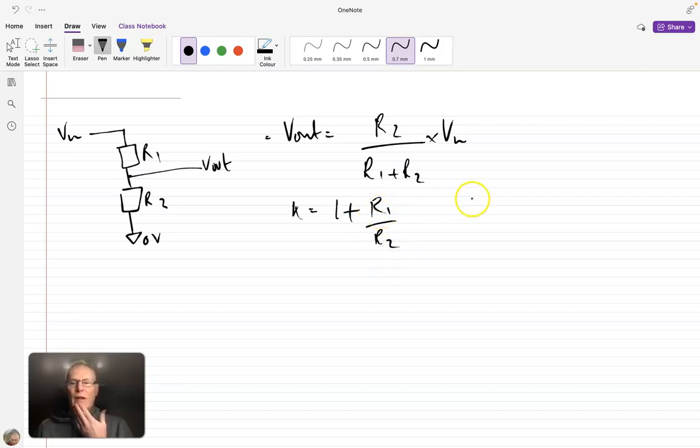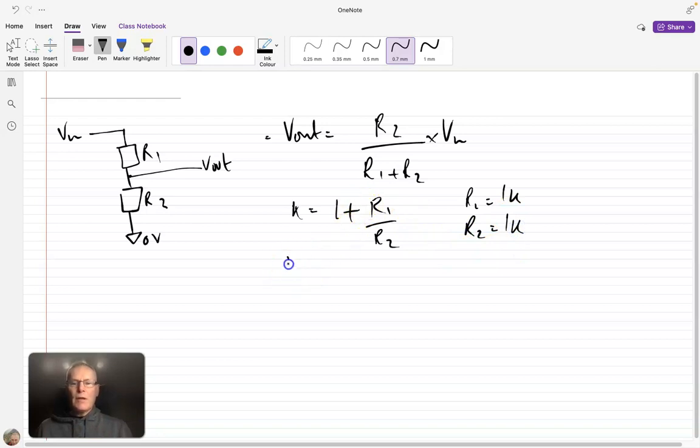For example, if we made R1 equal 1K, and R2 equal 1K, we can see that K in this case would be 2. What this says is, this is going to be our attenuation coefficient, so we're going to attenuate the signal by 2 times.